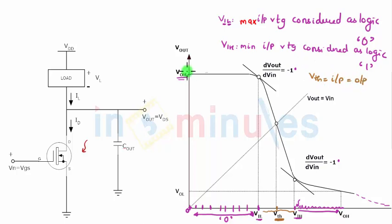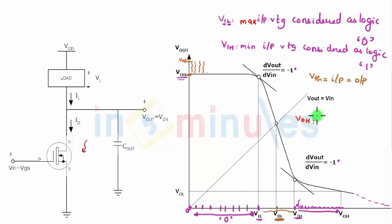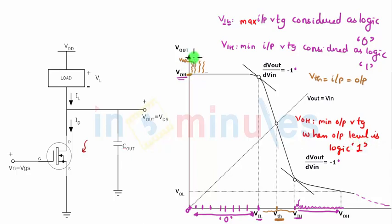Now comes VOH and VOL. Technically, when your input is 0 you want your output to be VDD, but in some cases it might not be VDD — it depends. If it's VDD, great. If it's not VDD, it has still more room to go up and reach VDD. So how do we define VOH? VOH is nothing but the minimum output voltage when the output level is logic 1. This is minimum — it can still go up and reach VDD.